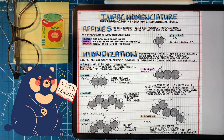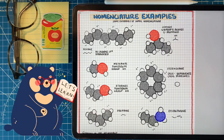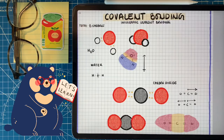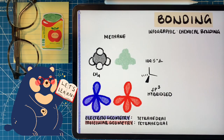Hello everyone, how's it going? In the last video we talked about nomenclature — an introduction to the grammar rules of organic chemistry — and we're going to be talking more about that later when we introduce new functional groups and molecules. But I want to start working on describing bonding.